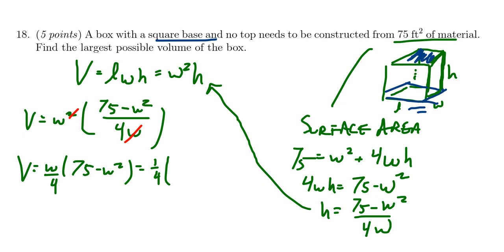You can leave the constant multiple out, so we get one fourth times 75w minus w cubed. When we calculate the derivative here, V prime, we're going to get one fourth times 75 minus 3w squared.